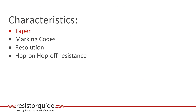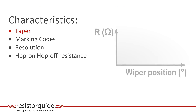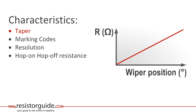When selecting a potentiometer, there are some important characteristics to take note of. The taper is the ratio between the wiper position and the resistance ratio. The most common are the linear taper and the logarithmic or audio taper.